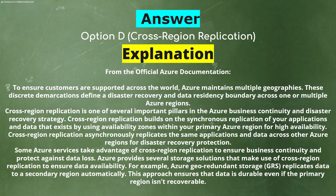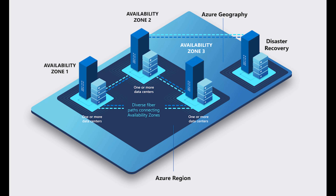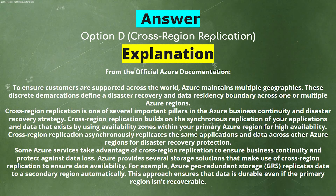Cross-region replication is one of several important pillars in the Azure business continuity and disaster recovery strategy. Cross-region replication builds on the synchronous replication of your applications and data that exist by using availability zones within your primary Azure region for high availability. Cross-region replication asynchronously replicates the same applications and data across other Azure regions for disaster recovery protection. Some Azure services take advantage of cross-region replication to ensure business continuity and protect against data loss. For example, Azure geo-redundant storage replicates data to a secondary region automatically, ensuring that data is durable if the primary region isn't recoverable.